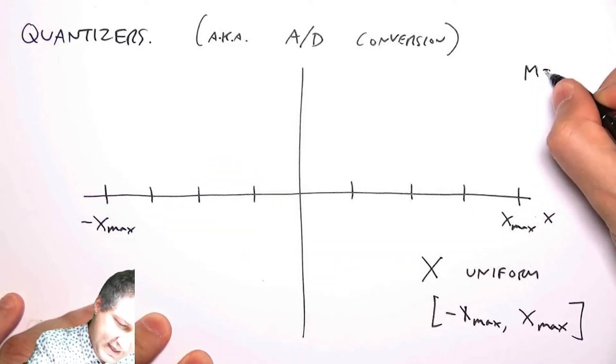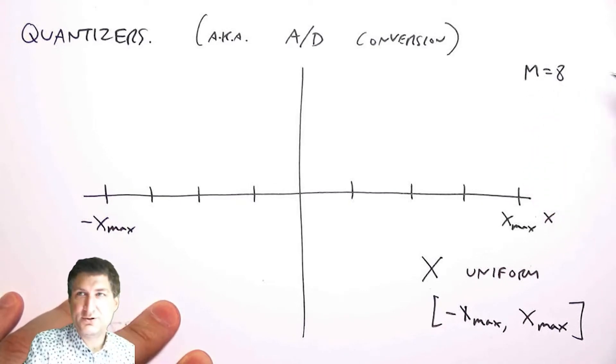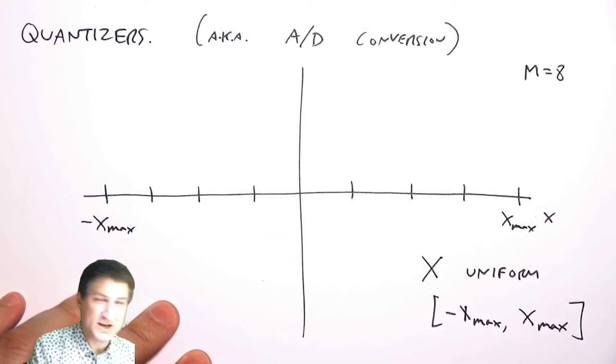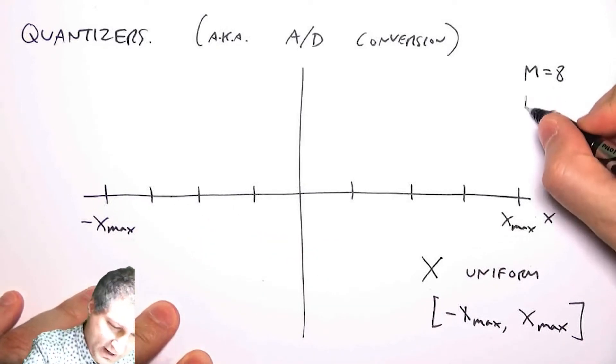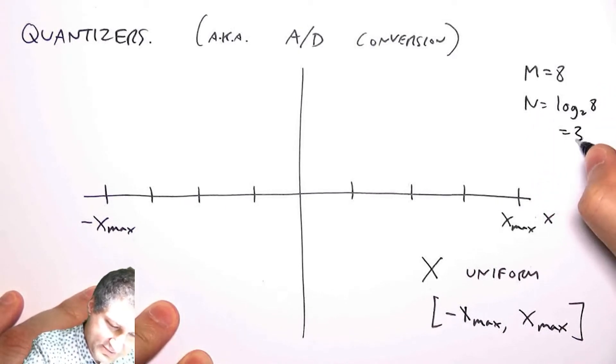So let's suppose I have an eight bin quantizer, and sometimes you think about this as a binary set of bits. To encode each of these bins I'm going to use zero zero zero, zero zero one, and so on. So my N is like log two of eight which is three, so you might call this like a three-bit quantizer.